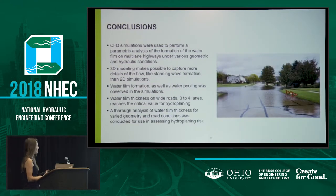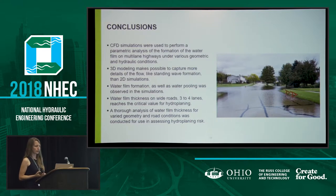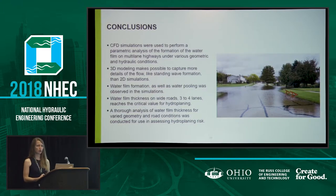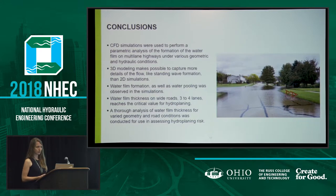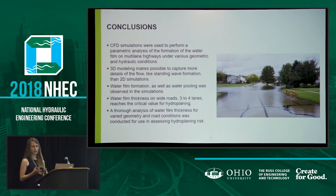In short, we performed a parametric matrix of different test cases where we checked what the water film thickness and spread were on a roadway under different geometric and hydraulic conditions. Thanks to 3D CFD modeling, we were able to capture more details of the flow which would be impossible with simpler solutions. One important conclusion is that we found that the water film thickness on wider roads — three or four lanes — reaches the critical value for hydroplaning, so we should remember that when we drive.